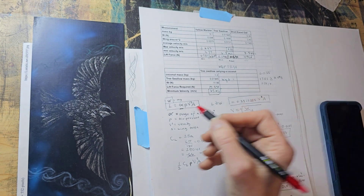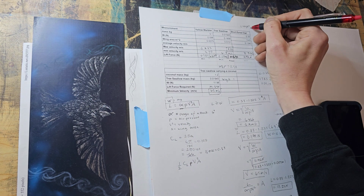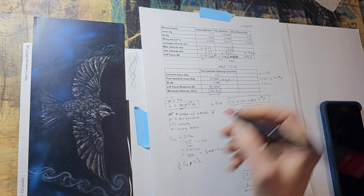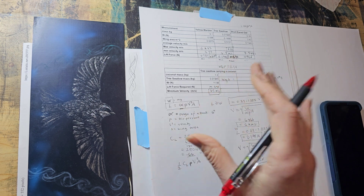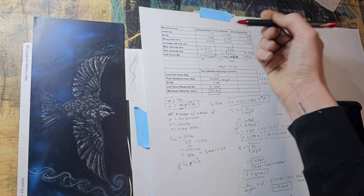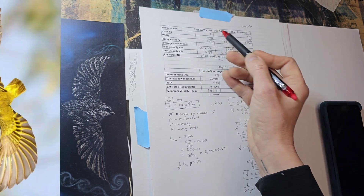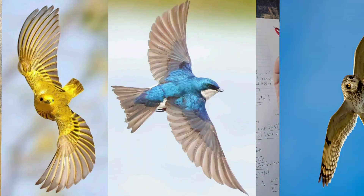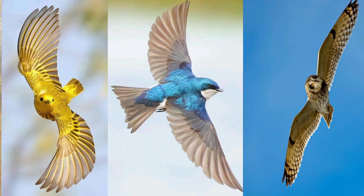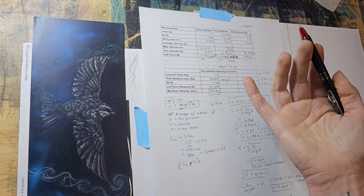I knew I had this cool equation here for calculating lift, but I practiced drawing with it and I didn't like it. It just wasn't going to make a gradient that I liked. So I wanted to create some numerical values that are easier to play with, and I wanted to calculate lift for my three birds — my yellow warbler, tree swallow, and short-eared owl — and also the minimum velocity that they would need to fly to sustain that lift.